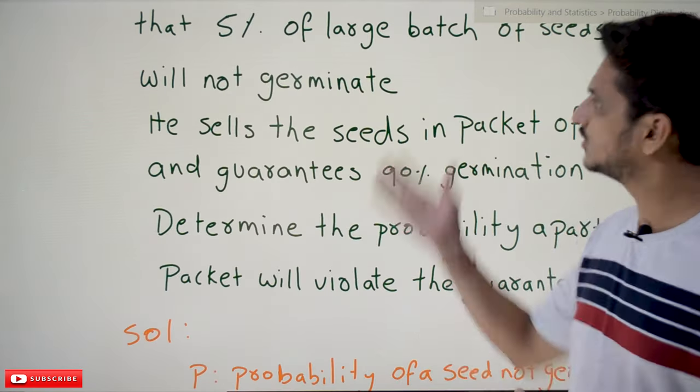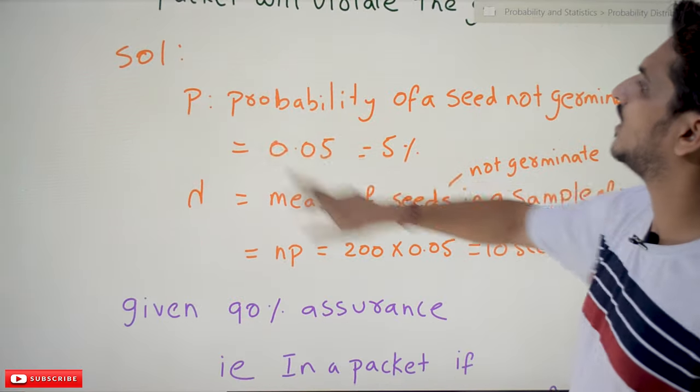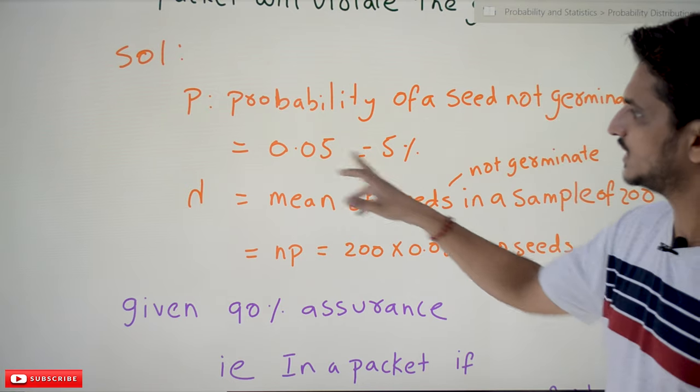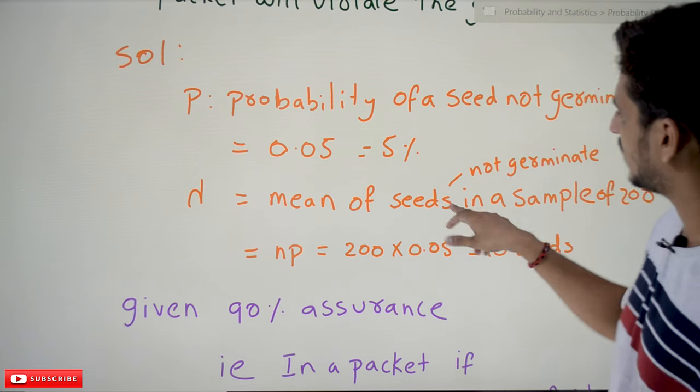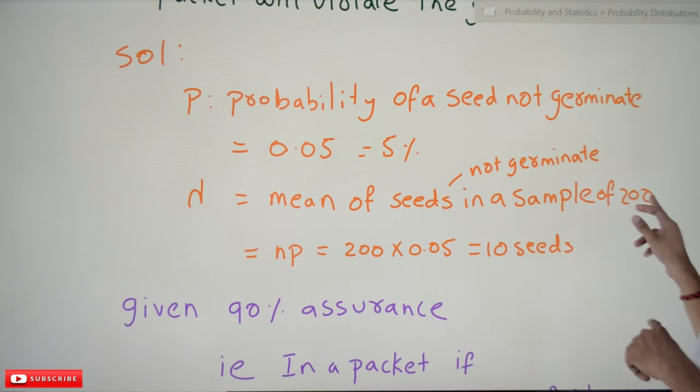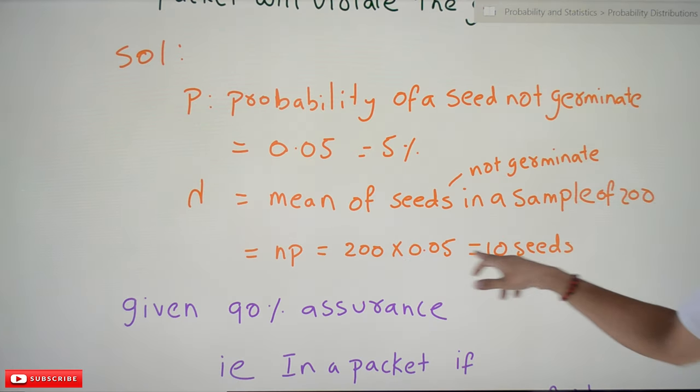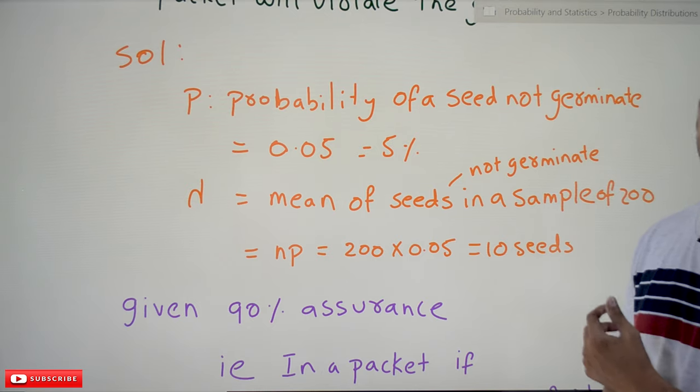Coming to the solution: Probability of seeds not germinating, it was given from the last sample as 0.05, that is 5%. Lambda value you have to identify. Mean of seeds not germinated in a sample of 200: np is given as 200 times 0.05, which equals 10 seeds. On an average you are going to miss 10 seeds from the packet. So you got the lambda value.